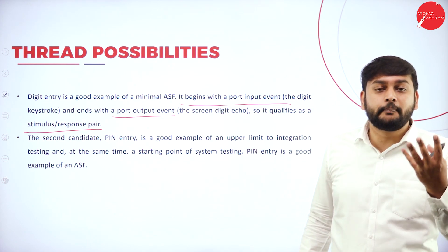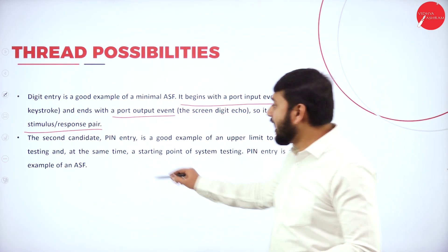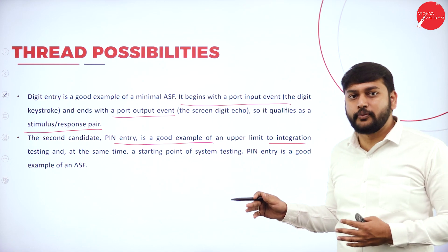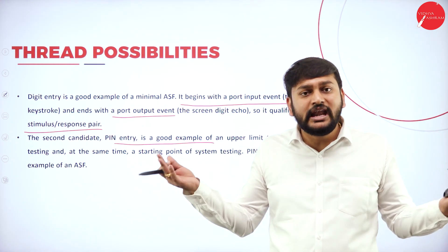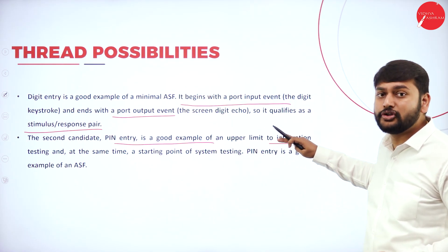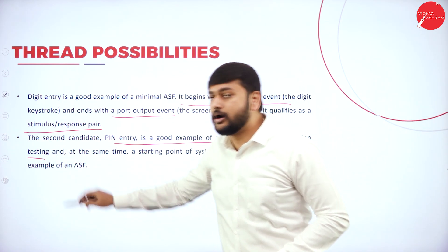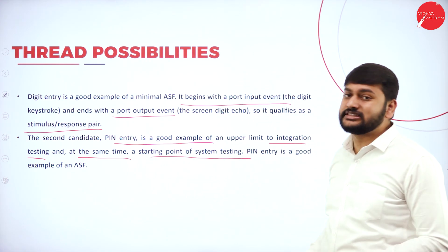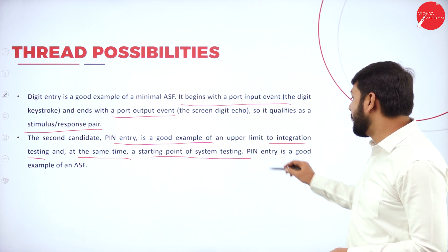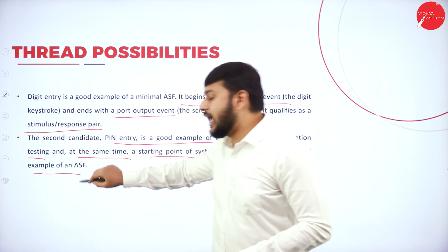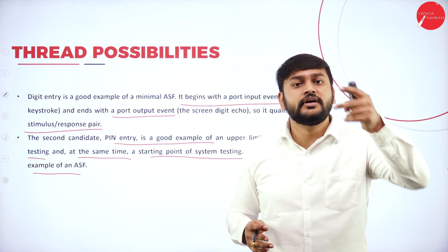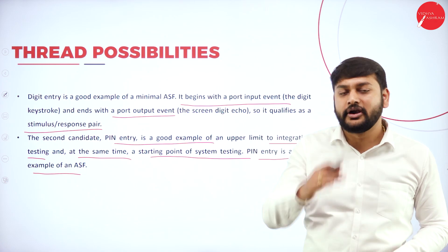Moving to the second candidate: PIN entry is a good example of upper-limit integration. PIN entry is not an independent task — I cannot execute it alone. It is dependent on the first candidate. That's why we call it the upper limit of integration testing, and also the starting point of system testing. PIN entry is a good example of ASF — it is both the starting point of system testing and the integration upper limit.